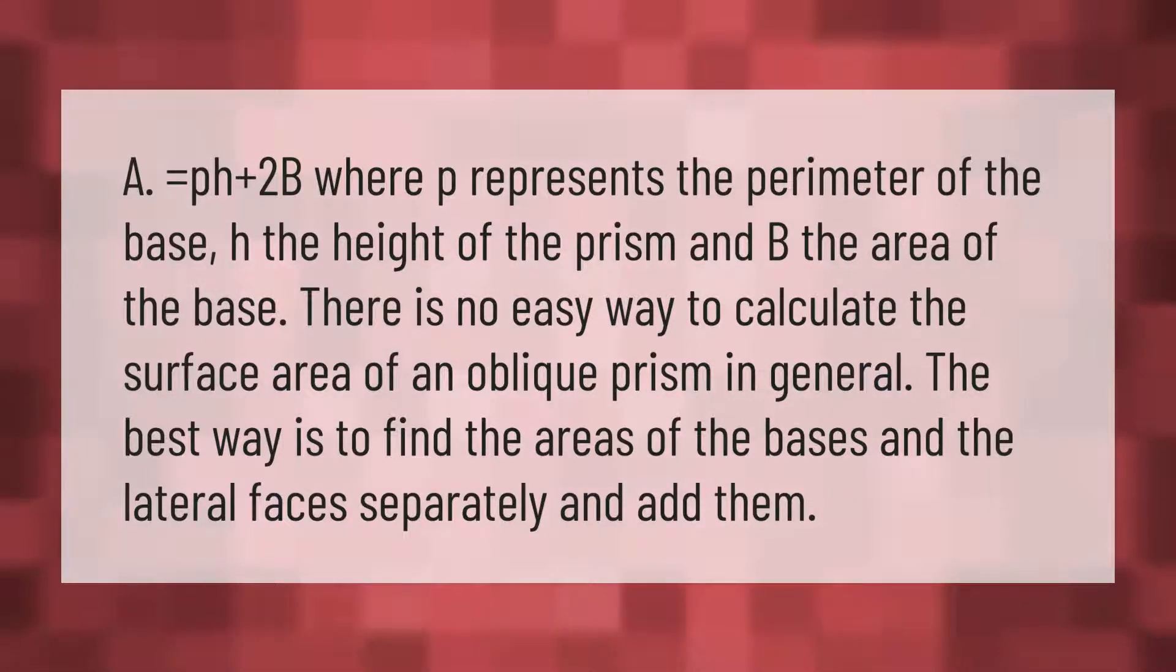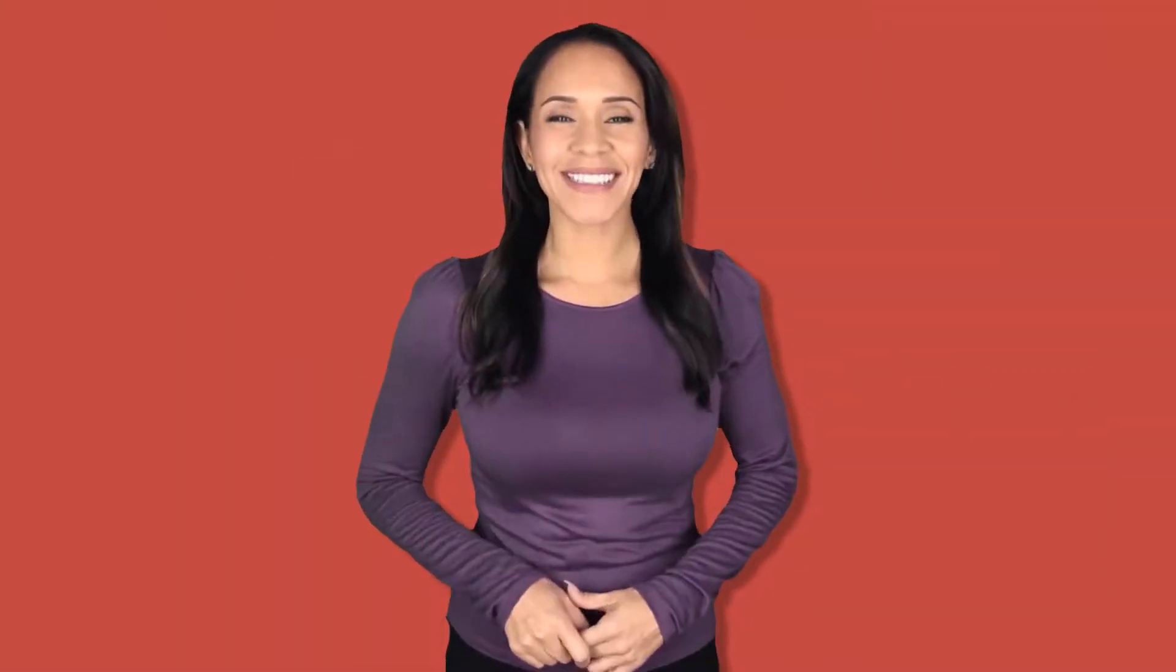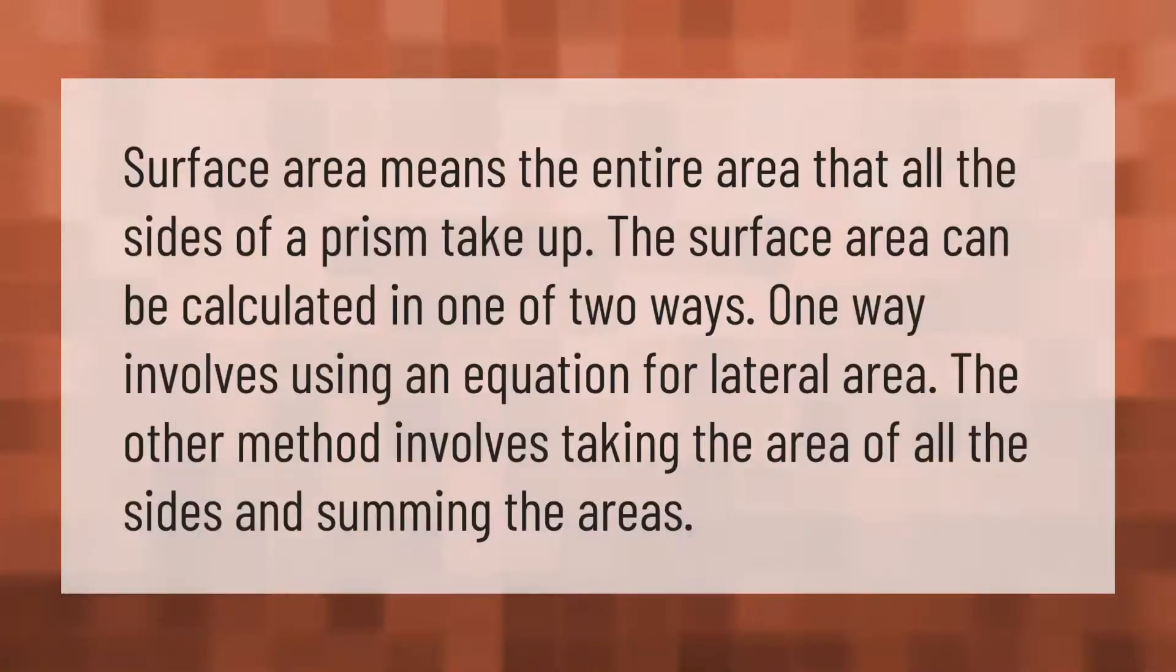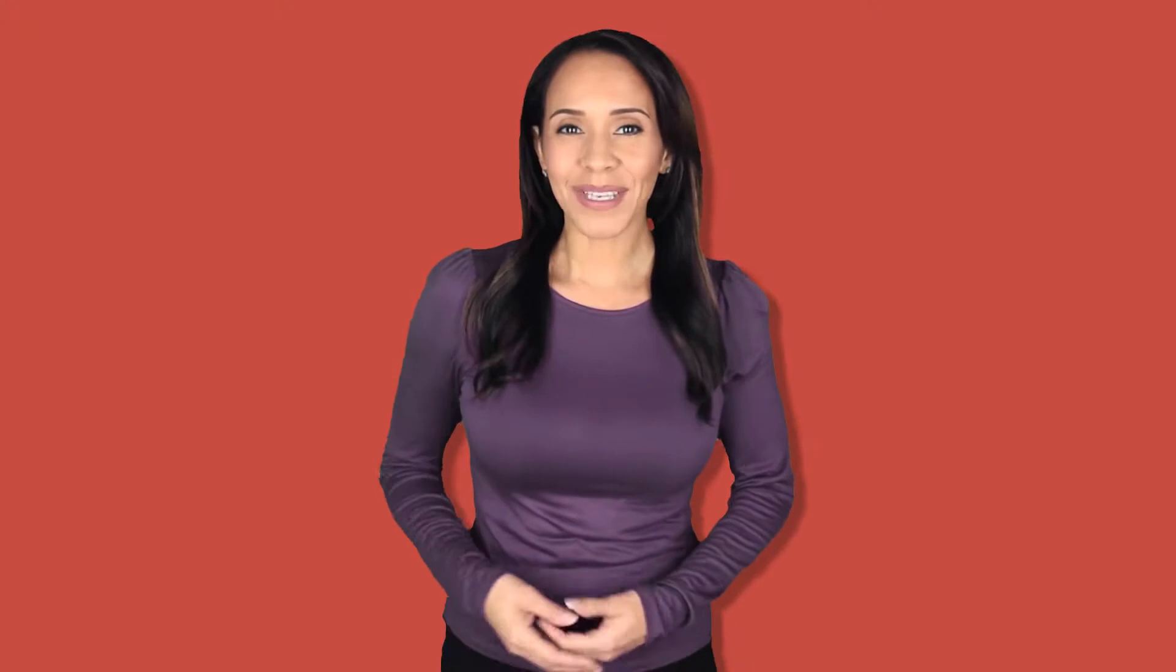Surface area means the entire area that all the sides of a prism take up. The surface area can be calculated in one of two ways. One way involves using an equation for lateral area. The other method involves taking the area of all the sides and summing the areas.